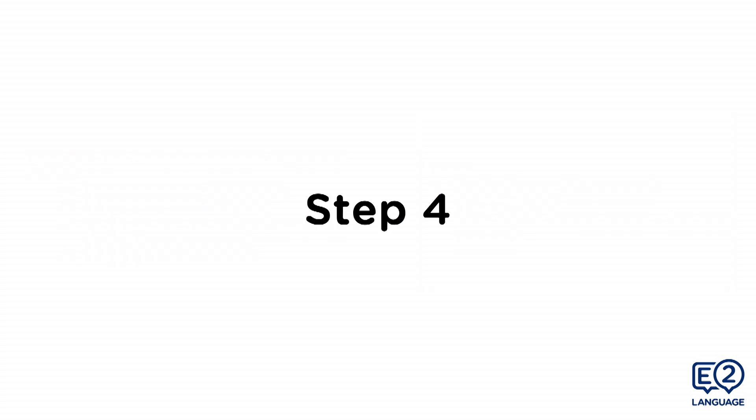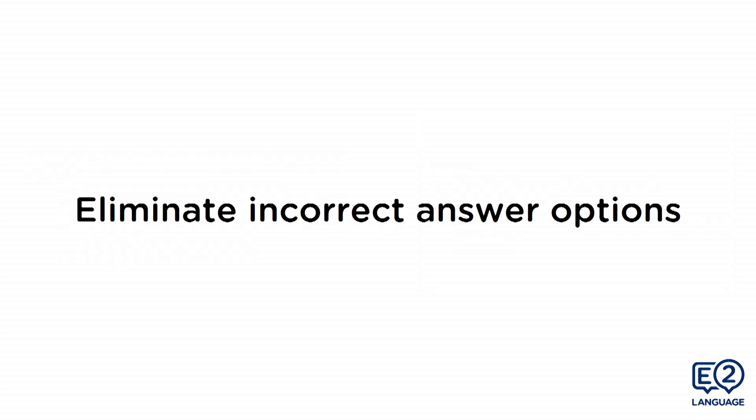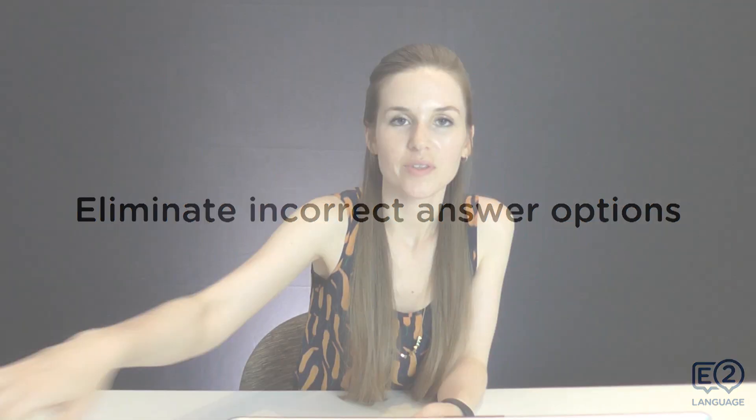Our next step is to eliminate any incorrect answer options. Remember they like to include a few extra details, a few other things to throw you off the main idea. It's important that you pay careful attention to the main purpose of the conversation. Take a look at the question and your notes, and try to eliminate any options that are clearly wrong.